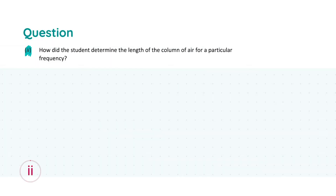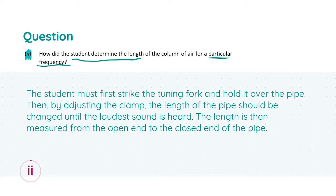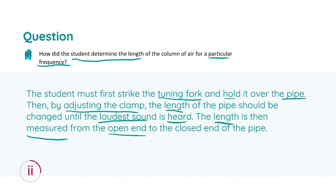Looking at part two, we're asked to explain how the student determined the length of the air column for a particular frequency. The student first strikes the tuning fork and holds it over the mouth of the pipe. They then change the length by adjusting the clamp, which produces a change in the loudness of the sound. They listen for the loudest sound — the point where resonance occurs — and then measure that length from the open end to the closed end of the pipe using a ruler.